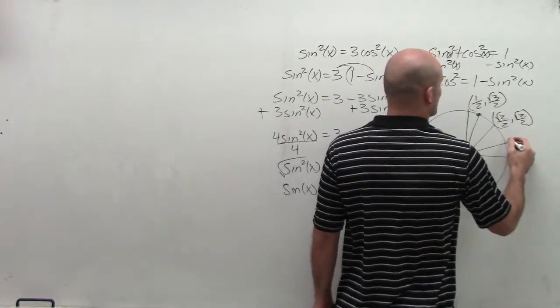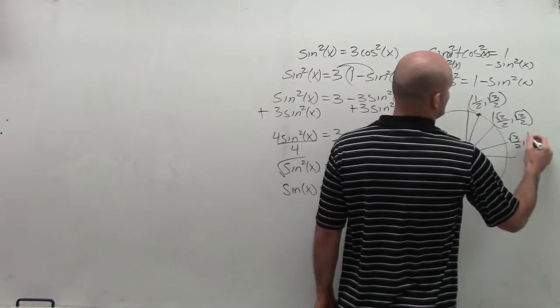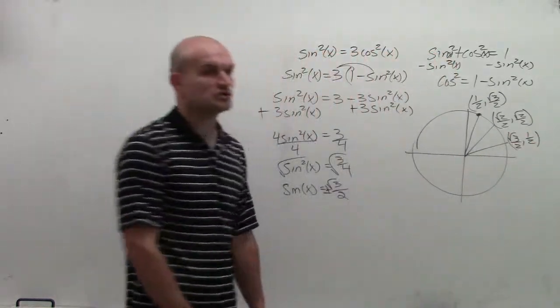So it's important that you either have the unit circle with you or that you have a way to know at least the points of the first quadrant.